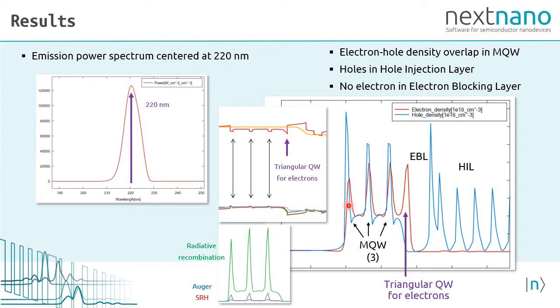We can see that in this multi-quantum well region, we have both electron and hole density. So we have the desired overlap of the electrons and the holes. We can also see that we have a fourth region where we have a significant electron density. This is due to this triangular quantum well potential for the electrons, which is not a quantum well for the holes.